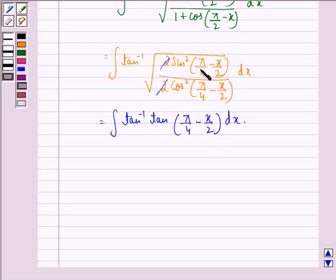Sin square pi by 4 minus x by 2 divided by cos square pi by 4 minus x by 2 is same as tan square pi by 4 minus x by 2. And when that comes out of the square root it becomes tan pi by 4 minus x by 2.